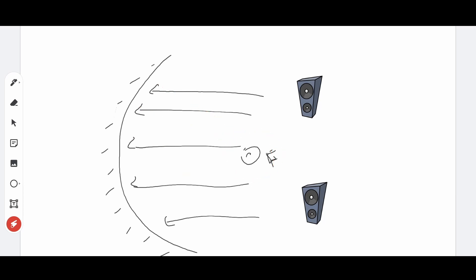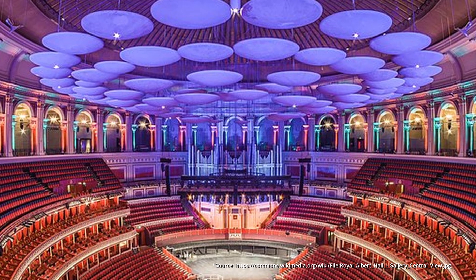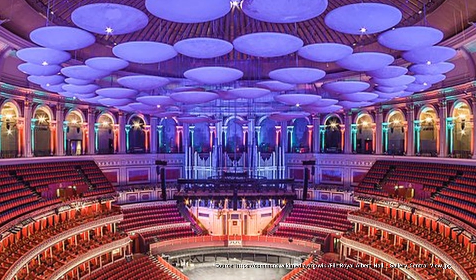The best way to work around any curved surface is to add an absorbing or a diffusing layer on top. Royal Albert Hall's dome has these amazing discs hanging from the ceiling as a defense against this problem.